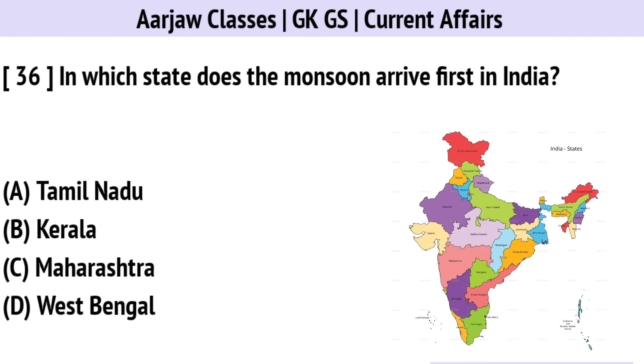In which state does the monsoon arrive first in India? Correct option is B — Kerala.